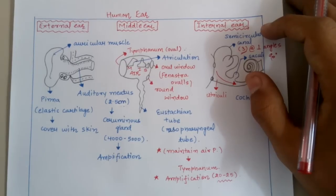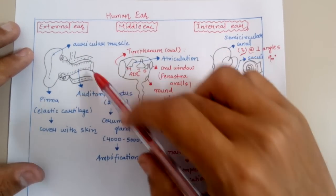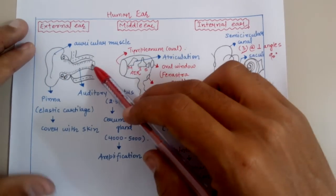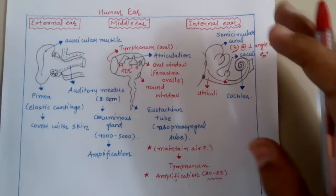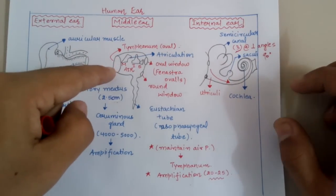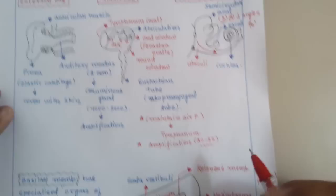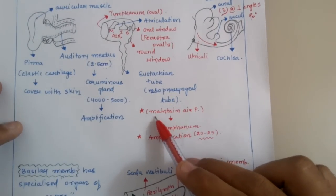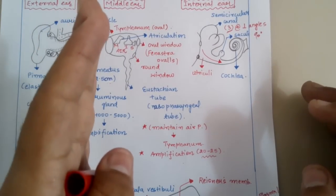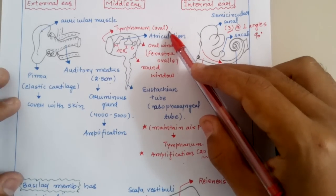The external ear opens into the middle ear via a membrane known as the tympanum, which is oval in shape. The tympanum's function is to maintain air pressure on both sides — in the external ear as well as in the middle ear. The middle ear is an air-filled chamber, an empty space with a lot of air inside.